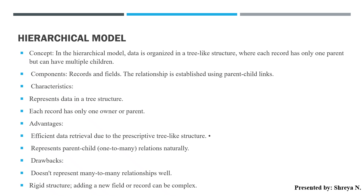One record can have only one parent but multiple children. The advantage is that there is a very valid link formed from parent to child, so data retrieval becomes much more efficient and effective, and it represents parent-child relationships naturally. The drawback is many-to-many relationships are not supported since one entity can have only one parent, and the structure is very rigid — inserting a field or record is more complex than in the network or relational model.